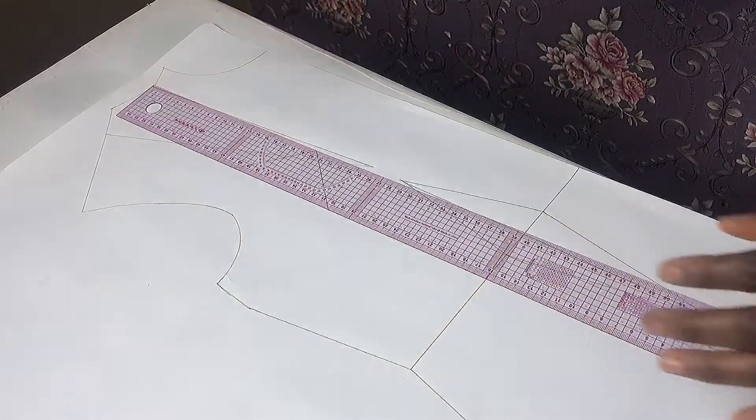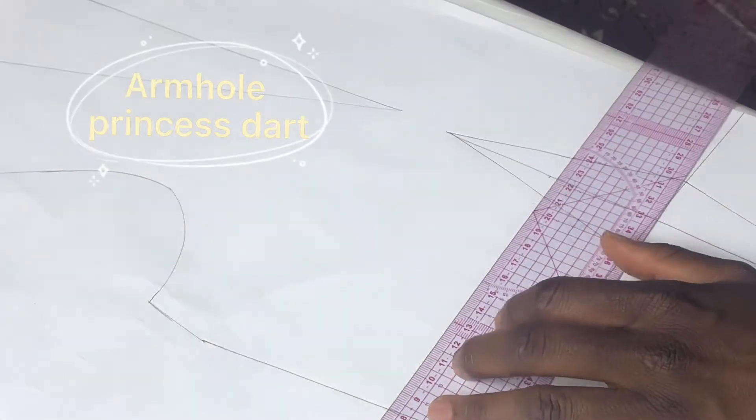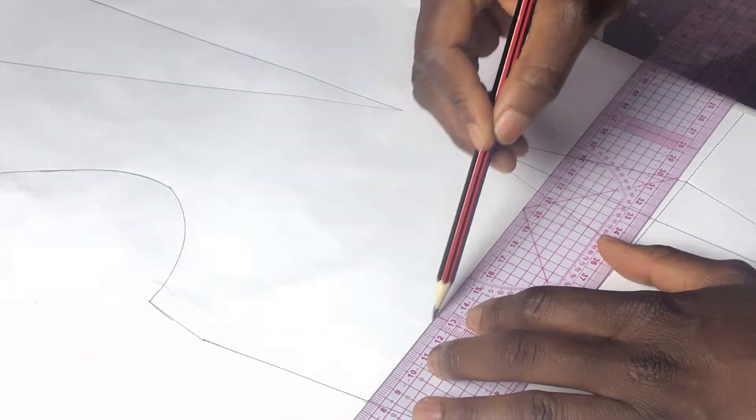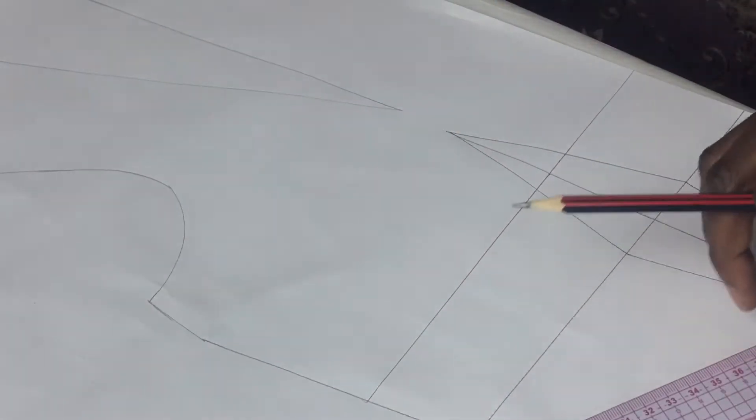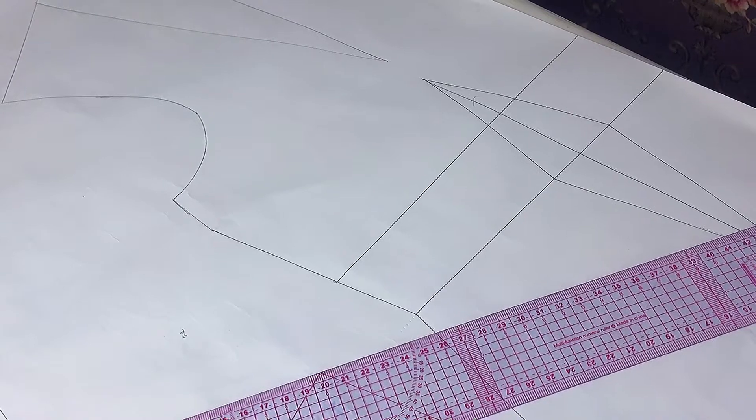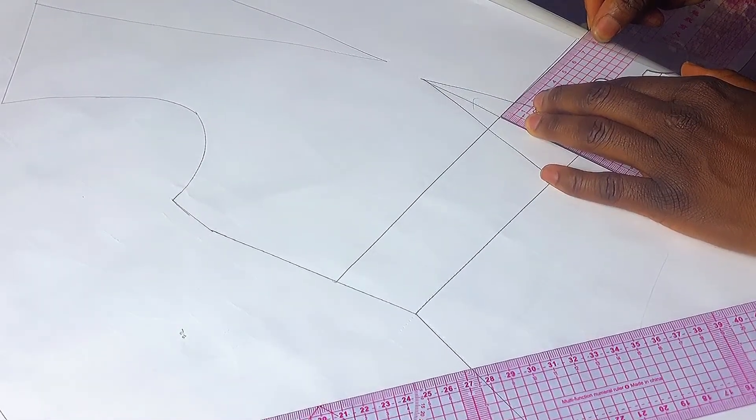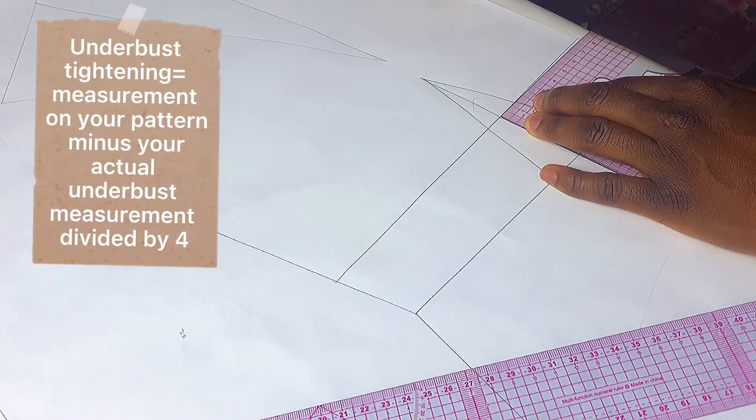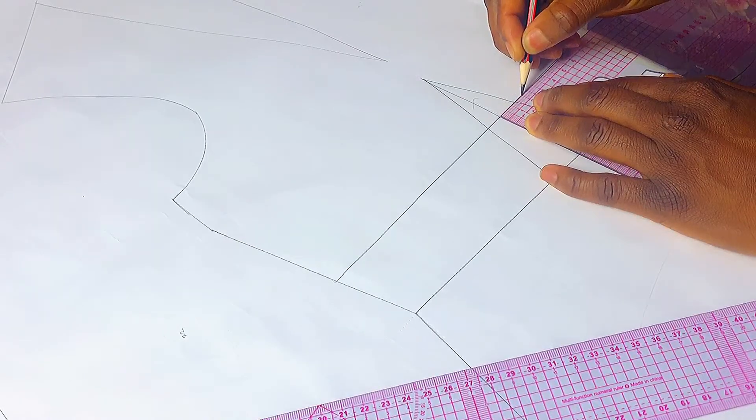Starting with the armhole princess dart seam, the first thing to do is your underbust tightening. First you take your shoulder to underbust length on your bodice and then you square across. Next you measure what you have on your underbust point.